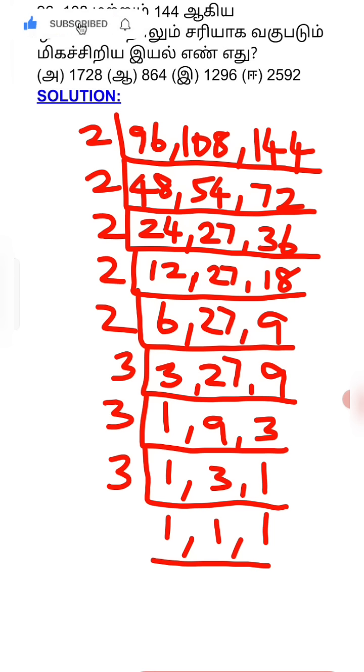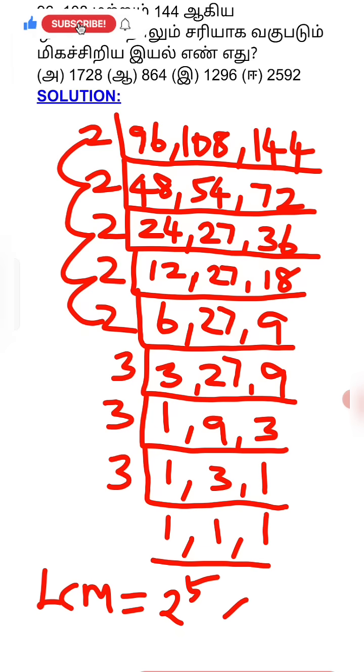Once we divide completely, we count how many times each prime appears. How many times does 2 appear? 1, 2, 3, 4, 5. So 2 comes 5 times. The LCM is 2 to the power 5, multiplied by...